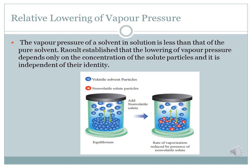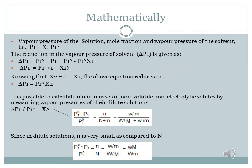When we add non-volatile solute particles together with these volatile solvent particles, it clearly shows that the rate of vaporization decreases. So the rate of vaporization decreases as well as the vapor pressure decreases when we add non-volatile solid particles together with the volatile solvent particles.